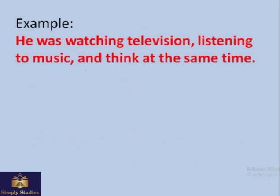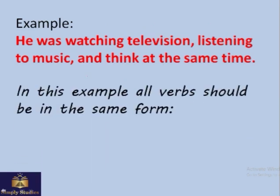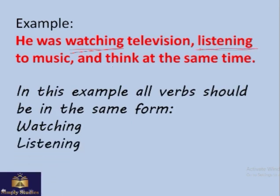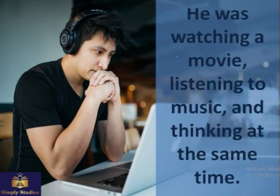For example, consider the sentence: 'He was watching television, listening to music, and think at the same time.' What's the problem here? He was watching television, listening to music, and thinking — so the word 'think' is not correct. The correct form is: 'He was watching a movie, listening to music, and thinking at the same time' — all elements in the same grammatical structure.